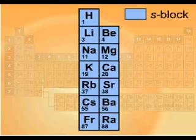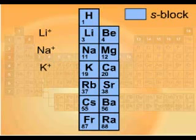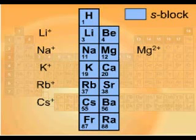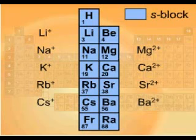Compounds of S-block elements have an ionic structure, in which group 1 elements occur as Li+, Na+, K+, Rb+, and Cs+ cations, and group 2 elements as Mg2+, Ca2+, Sr2+, and Ba2+ cations.